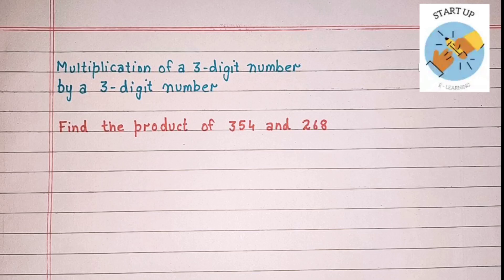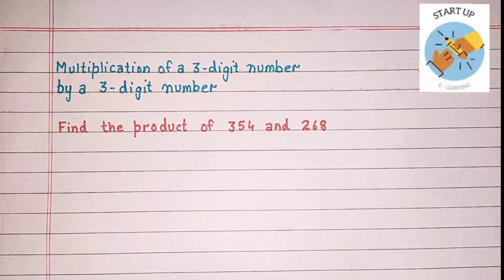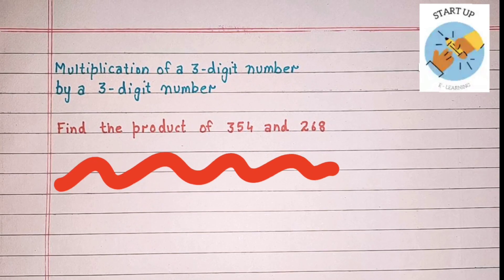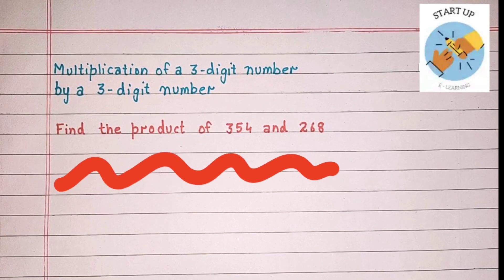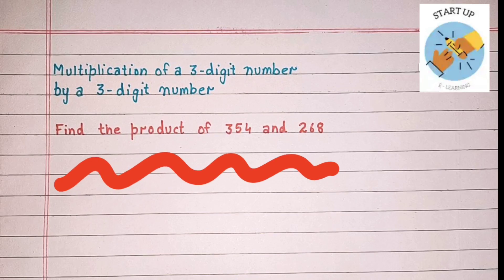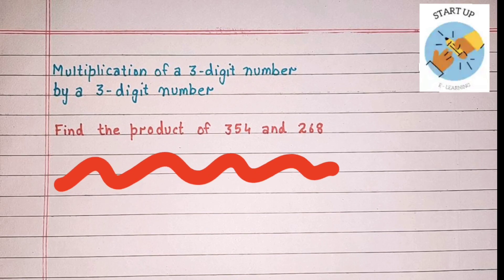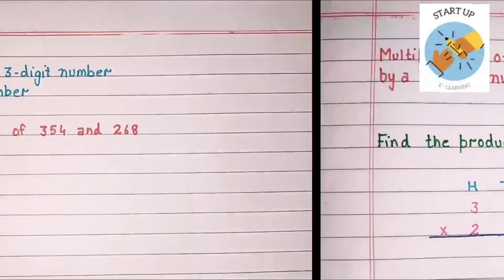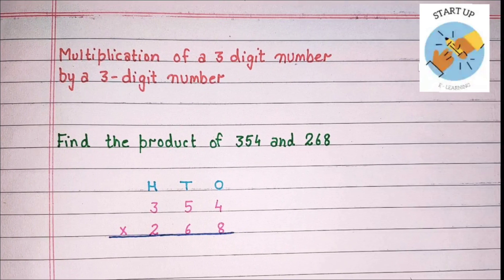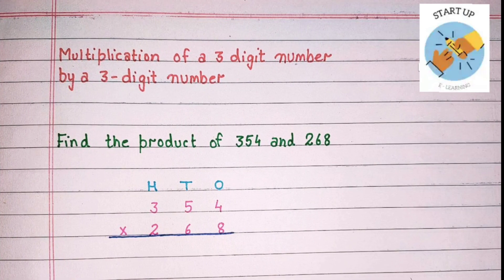Let's understand this by finding the product of 354 and 268. First of all, we need to arrange them according to their places. 4 will be written under the ones place, 5 will be written under the tens place, and 3 will be written under the hundreds place.